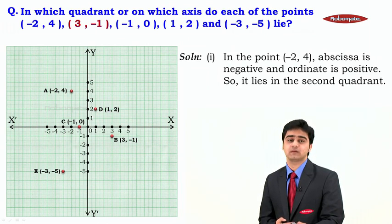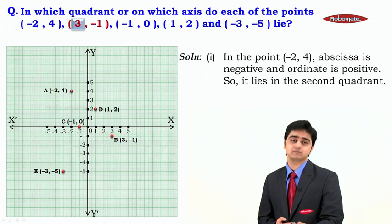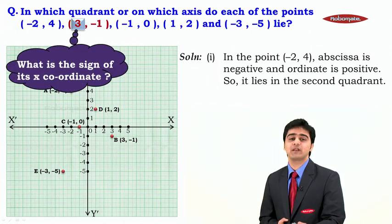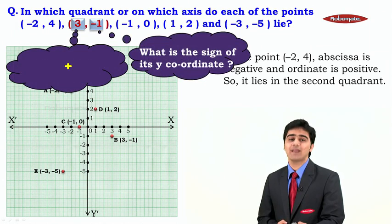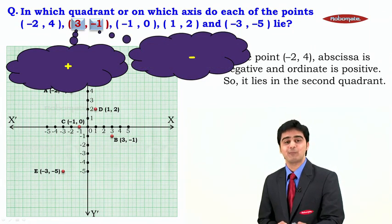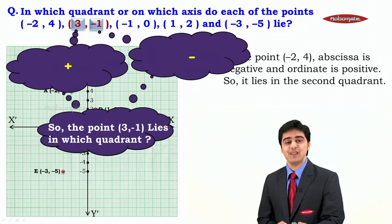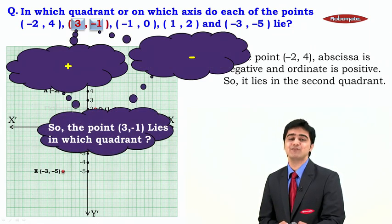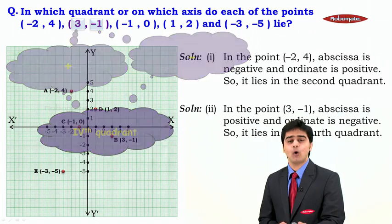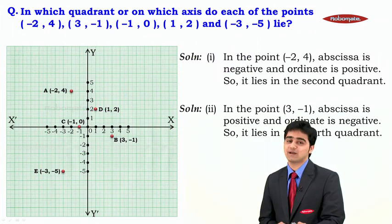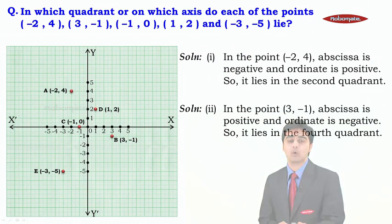The second point has got its coordinates to be 3 comma minus 1. The sign of its x coordinate is plus, and the sign of its y coordinate is minus. So the point 3 comma minus 1 lies in the fourth quadrant. In the point 3 comma minus 1, the abscissa is positive and the ordinate is negative, so it lies in the fourth quadrant.